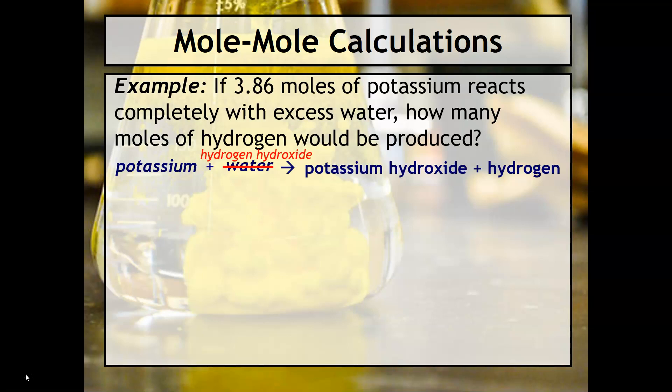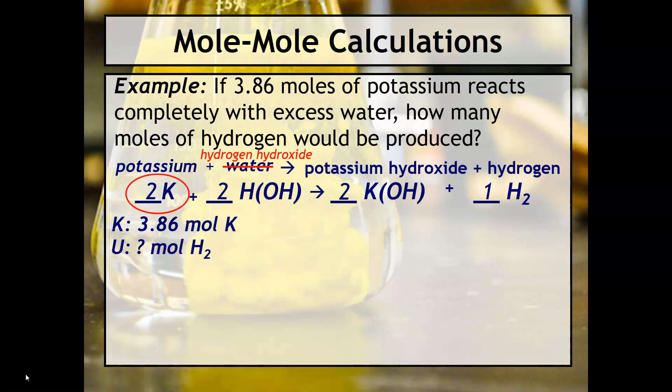Then we'll convert our word equation into our formula equation. Now comes the known and the unknown, and this is what you're used to. So we know that we have 3.86 moles of potassium, and what we're trying to find is how many moles of hydrogen. I find it's really helpful to circle the substances that you're working with in the balanced chemical equation because it'll make it a lot easier for you to select your mole ratio that way.